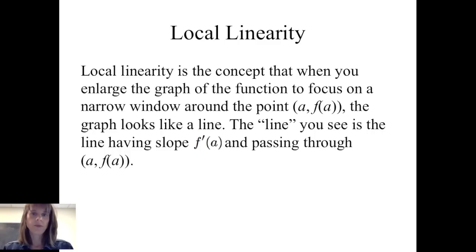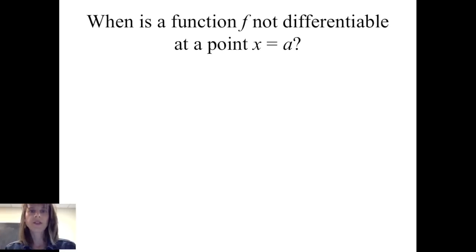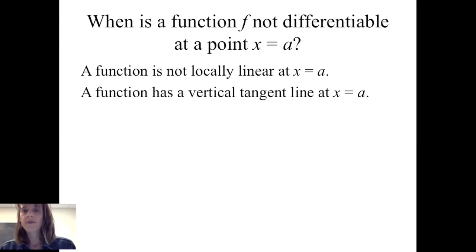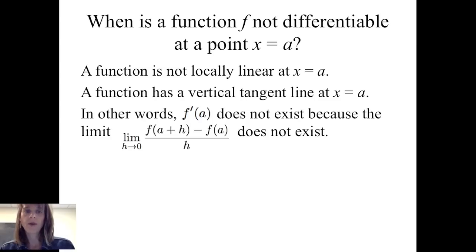We'll wrap up this session by talking about local linearity as it relates to whether a function is differentiable. Local linearity is the concept that when you enlarge the graph of a function to focus on a narrow window about a specific point a, f of a, the graph looks like a line with slope f prime of a passing through that point. A function is not differentiable at x equals a if it is not locally linear at that point, or if the tangent line appears to be vertical — meaning f prime of a does not exist because the limit does not exist.